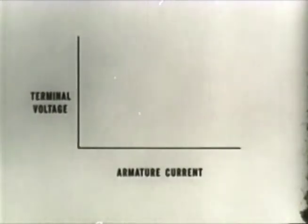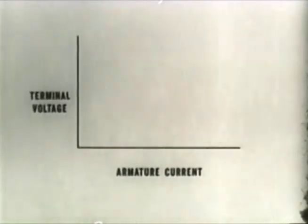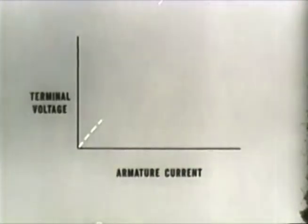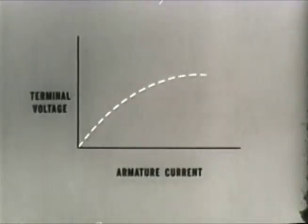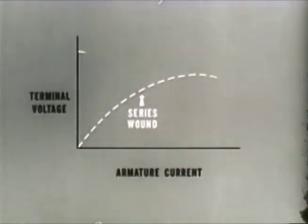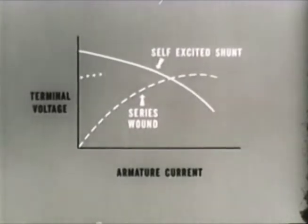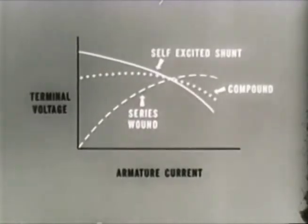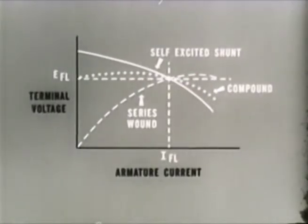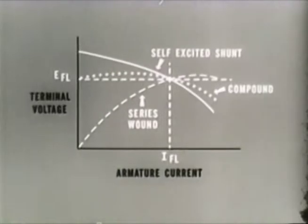A graphic representation of generator output characteristics with terminal voltage plotted vertically and armature current horizontally shows that the output of the series-wound generator has very poor voltage regulation. In parallel or shunt-wound generators, the voltage regulation is fairly good but current regulation is poor. Compound-wound generators offer a flat compounded output that is normally most desirable — it combines the good features of both the shunt and series-wound generators and provides stable voltage output under changing loads.